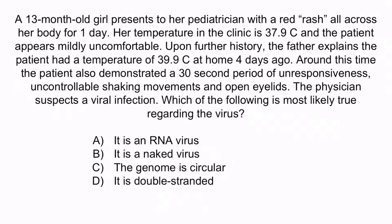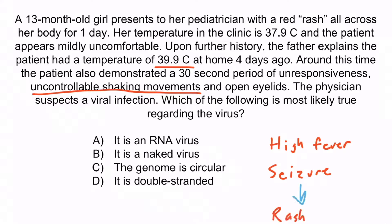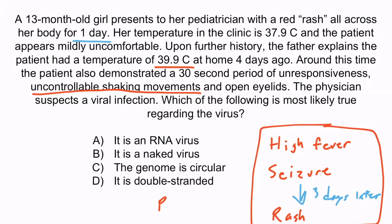Hopefully from the question stem, you noticed that the patient had a high fever and a seizure. She had a temperature of 39.9 Celsius — that's a high fever — and what sounds like a febrile seizure. Then she develops a rash, which would have been three days later for the patient, because she's had the rash for one day. Now this is a classic presentation of roseola, or HHV-6.